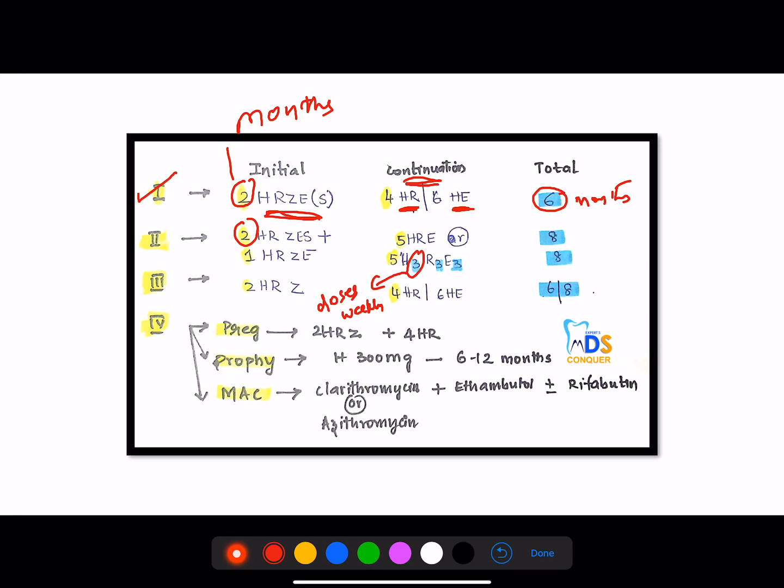Whereas this category 2 includes HRZES plus one HRZE, and in continuation phase for 5 months you have to use HRE. And these are the HRE which are given, the doses weekly, and it can be used for 8 months. Then coming to category 3, here there will be HRZ or 4 HR or 6 HE in continuation phase, and can be used for 6 or 8 months.